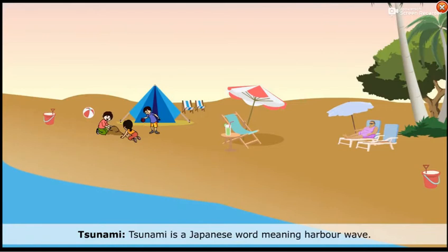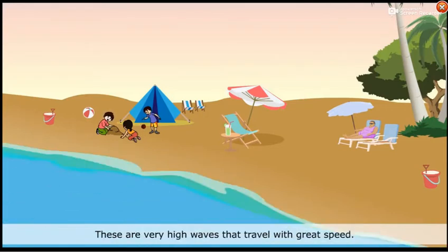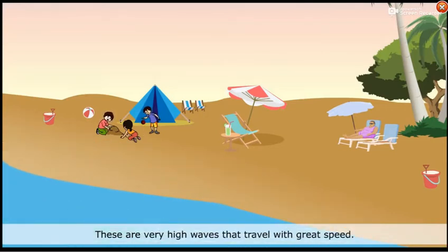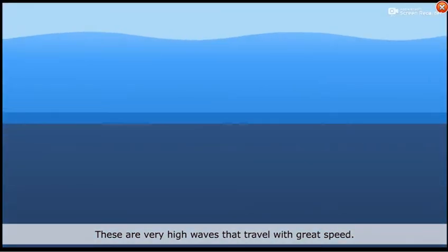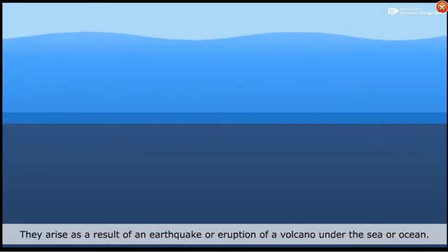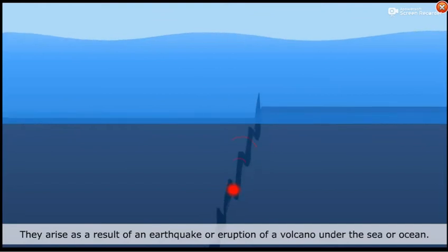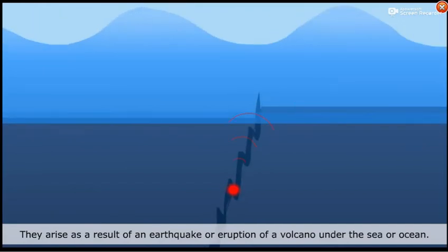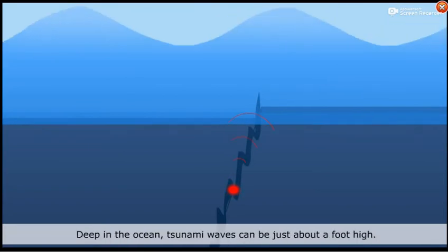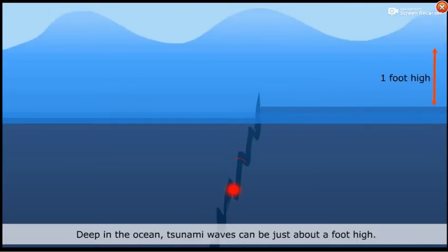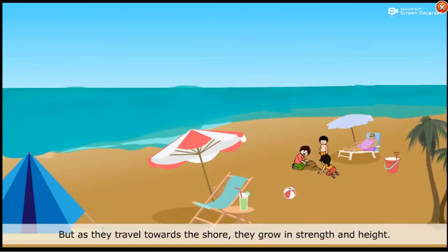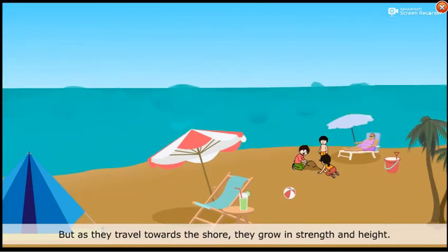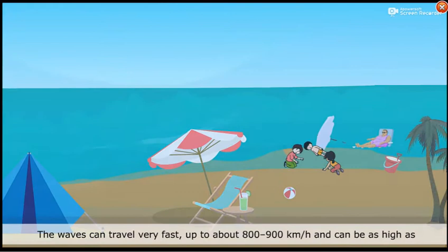Tsunami. Tsunami is a Japanese word meaning harbour wave. These are very high waves that travel with great speed. They arise as a result of an earthquake or eruption of a volcano under the sea or ocean. Deep in the ocean, tsunami waves can be just about a foot high, but as they travel towards the shore, they grow in strength and height.